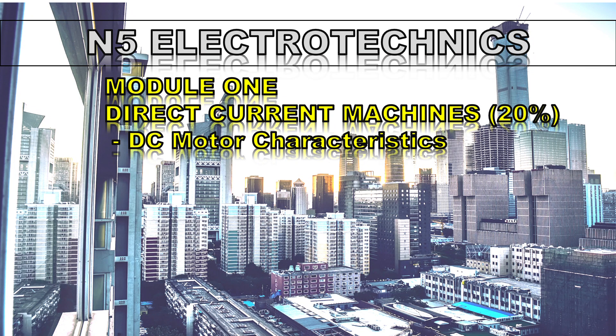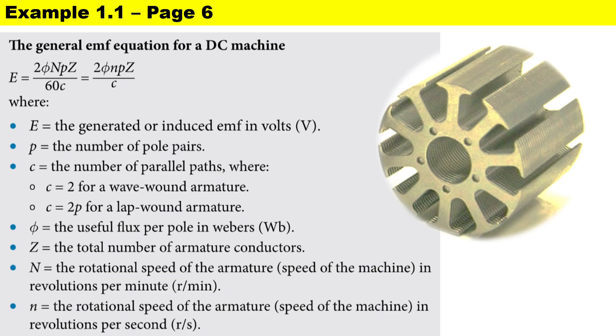This calculation is for N5 Electrotechnics and we are in Module 1, DC Machines, which makes up 20% of our curriculum. Now before we take a look at the example, let's just look at the EMF equation. Big letter E is the generated EMF in volts.